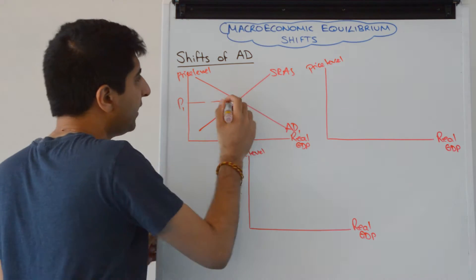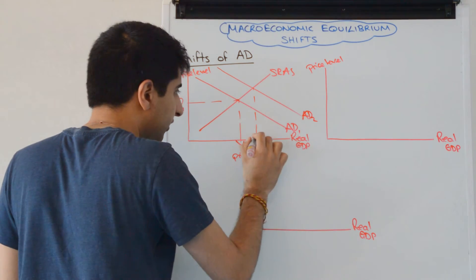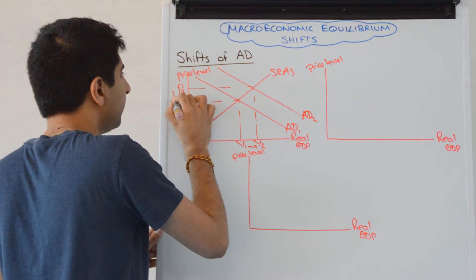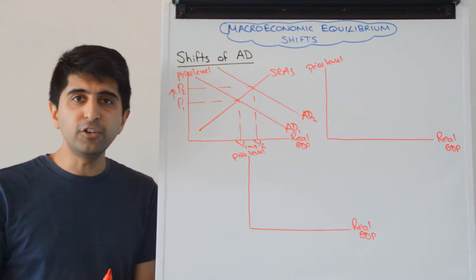Let's just take an AD shift to the right in each case. We've got AD1 to AD2, that's shifting it right, and then we're showing an increase in economic growth and an increase in demand pull inflationary pressure. So this is a very simplified version, but 100% correct.